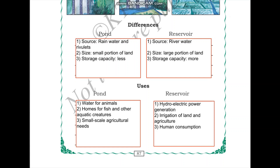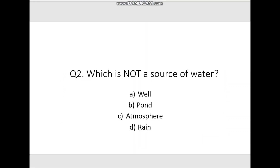Now we will have a quiz. The question is: which of the following is not a source of water? The options are well, pond, atmosphere, and rain. The correct answer is atmosphere — it is not a source of water, whereas wells, ponds, and rain are sources of water. Because this lesson is quite long, we are dividing it into two parts. This is the end of part one.